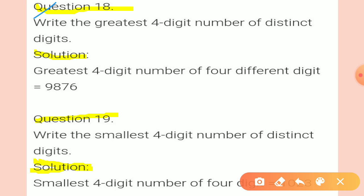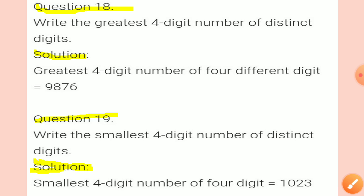Question 19: Write the smallest four-digit number with distinct digits. For the smallest number, start with 1, then 0, then 2, then 3. So the smallest four-digit number with distinct digits is 1, 0, 2, 3. Question 19 is completed.